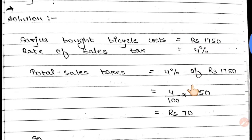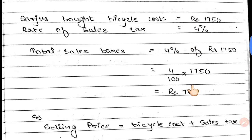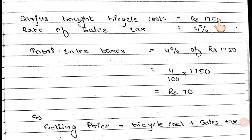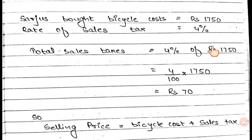Now let's see the solution. Surjus bought a bicycle. The print price of the bicycle is Rs.1750. The sales tax is 4% of Rs.1750.